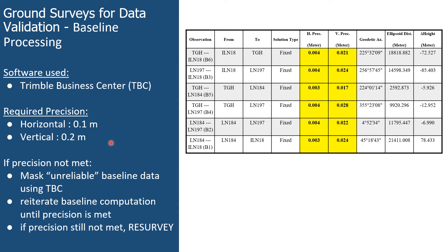From the table shown here, it can be seen that the ground control survey met the required baseline position. All horizontal errors are less than 0.1 meters and all vertical errors are less than 0.2 meters.